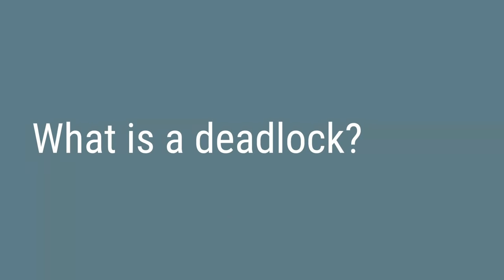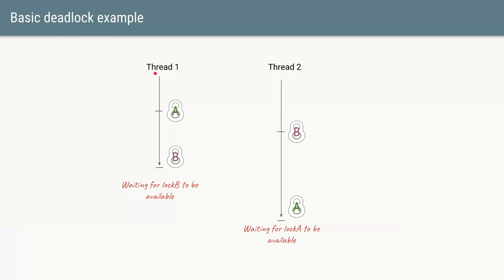Let's first understand what a deadlock is. Let's say we have Thread 1, which at some point acquires Lock A. After some time, for some other processing, it also requires Lock B. But before acquiring it, Thread 2 has already acquired Lock B, so Thread 1 will not be able to acquire it until Thread 2 releases it.